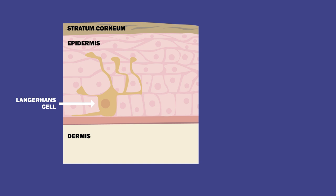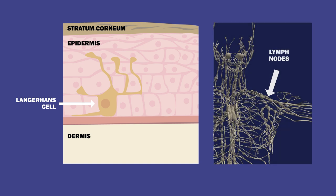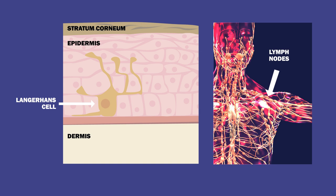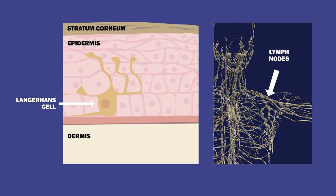The infected cells migrate to the lymph nodes, recruiting monocytes and macrophages, which in turn also become infected. The presence of the virus triggers a strong inflammatory reaction.